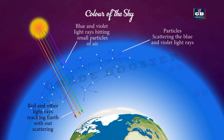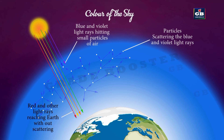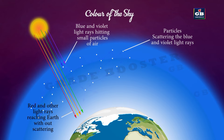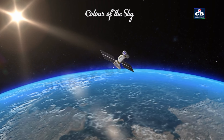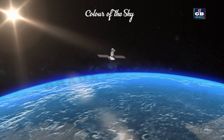Blue light is scattered more by dust particles present in the atmosphere, while other colors are not scattered as much — that's why the sky appears blue. If the Earth had no atmosphere, there would be no scattering and the sky would appear dark. This is why the sky appears dark to passengers flying at very high altitudes.